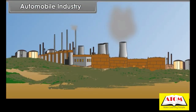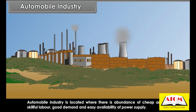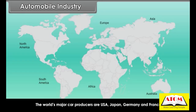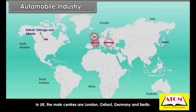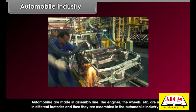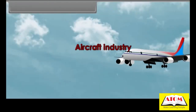Automobile industry is located where there is abundance of cheap and skillful labour, good demand, and easy availability of power supply. The world's major car producers are USA, Japan, Germany, and France. In the USA, major car-making centres are Detroit, Chicago, and Atlanta; in the UK, London, Oxford, and Birmingham. Automobiles are made in assembly lines, with engines, wheels, etc. made in different factories and then assembled.